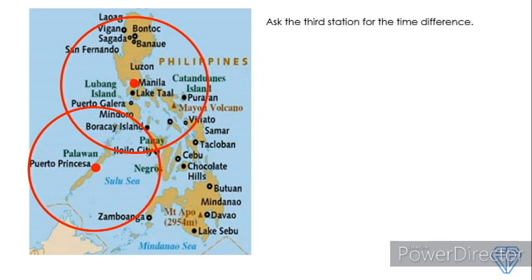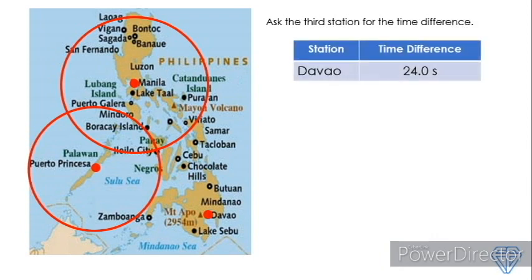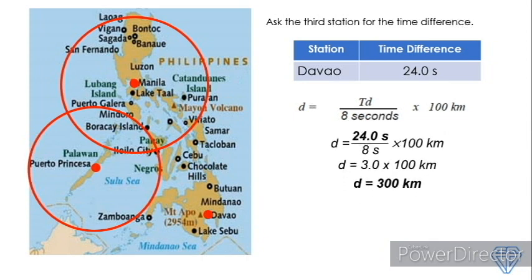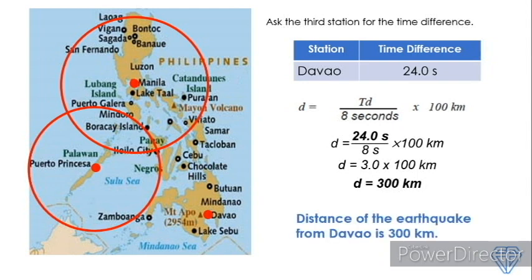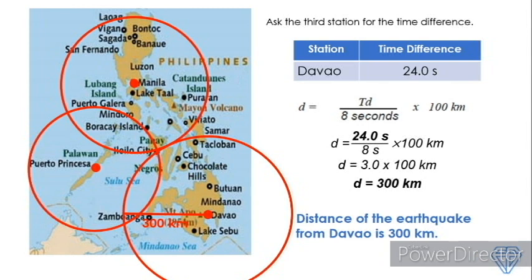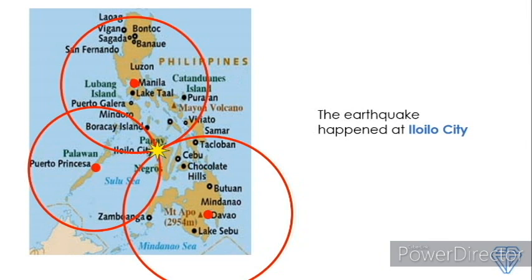So let's say we have the third station, which is Davao. We ask Davao for its time difference, and Davao reported 24.0 seconds. Using the formula, 24.0 divided by 8 seconds times 100 kilometers gives us D equal to 300 kilometers. Therefore, the distance of the earthquake from Davao is 300 kilometers. We draw a circle with a radius of 300 kilometers around Davao. In this case, all three circles intersect at a single point, which is Iloilo City. Therefore, the earthquake happened at Iloilo City.